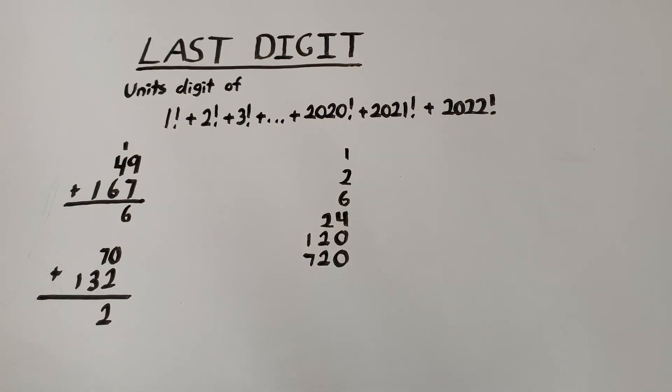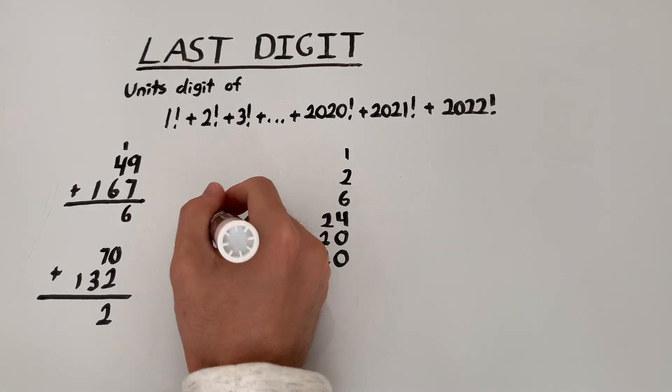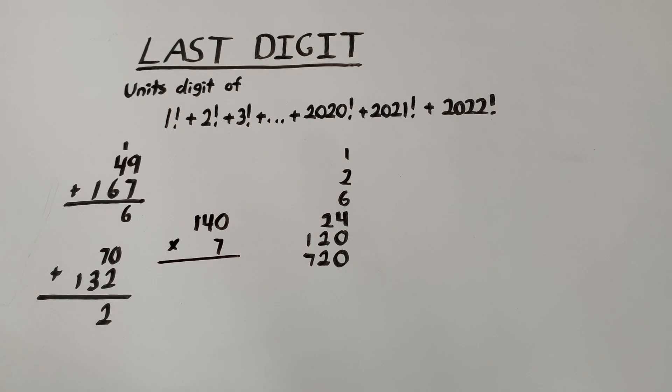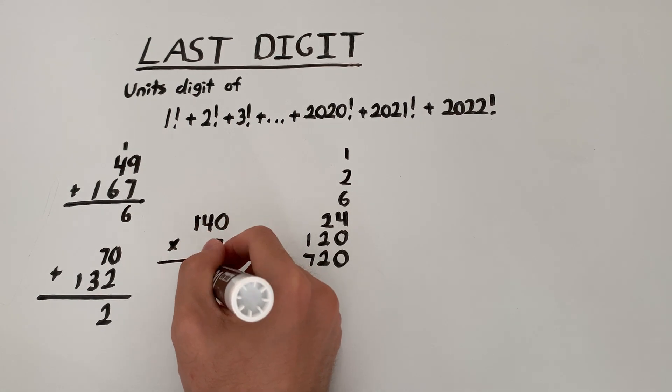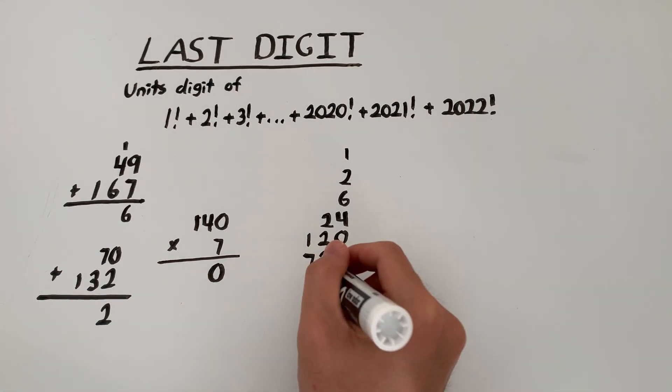Now this makes sense because once we get our first 0, the units digit for the numbers after will always be 0. Because 0 multiplied by anything also gives 0. For example, the units digit of 140 multiplied by 7 is just 0 times 7, which is the same as 0. So from 5 factorial, all the units digits will be 0.